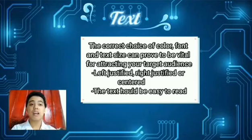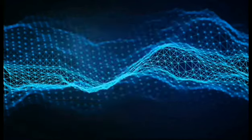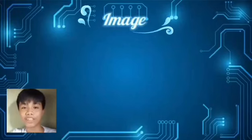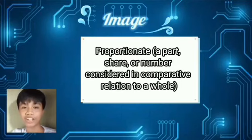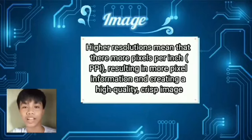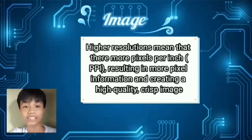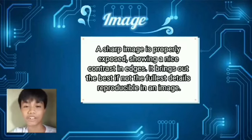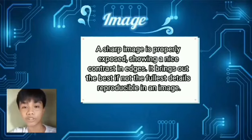Text should be left justified, right justified, or centered, and the flow of text should be easy to read. Images should be: A, proportionate — a part, share, or number considered in comparative relation to a whole; B, with high resolution — high resolution means that there are more pixels per inch (PPI), resulting in more pixel information and creating a high quality crisp image; C, sharp in color — a sharp image is properly exposed, showing a nice contrast in edge, and it brings out the best details reproducible in an image, looking crisp and sharp. This requires proper focus with great lens and best lighting possible.